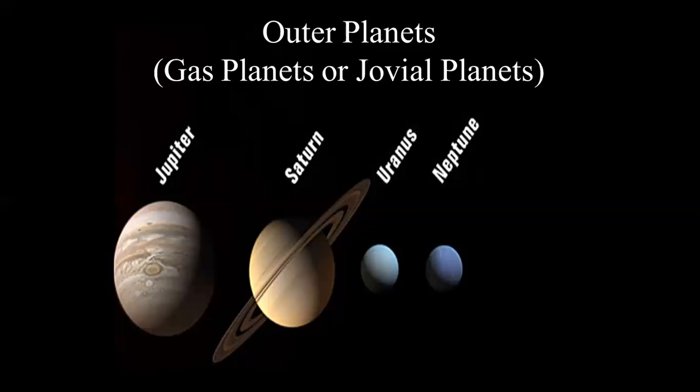We have seen that Jupiter is the largest planet from all planets, then Saturn, then Uranus, and then Neptune. Jupiter and Saturn are called gas giants because they are mostly gas. Uranus and Neptune, the last two planets, are called ice giants.